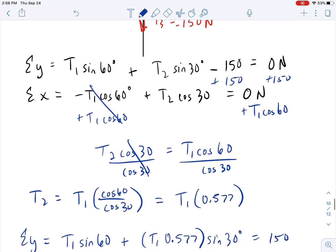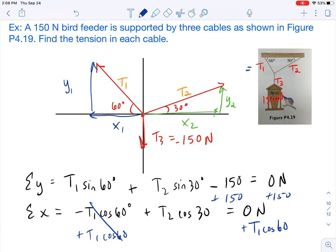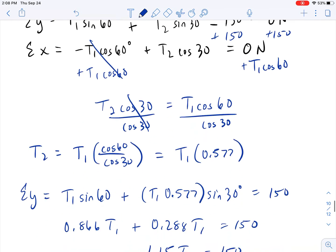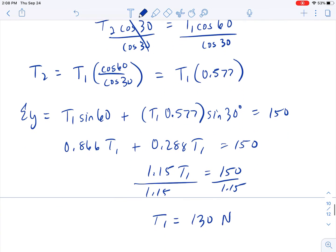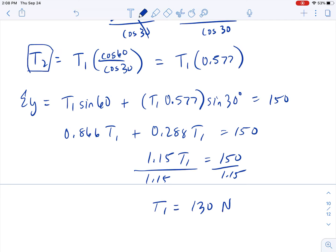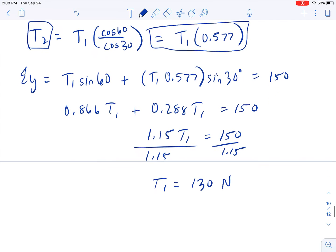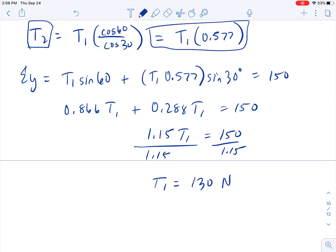So now we've solved T1. We know that this is 130 newtons. Now the only goal we have left is to solve for T2. And that becomes really easy because T2 equals T1 times 0.577. So T2 is going to equal T1, which is 130, times 0.577. And we get our answer of 75 newtons.